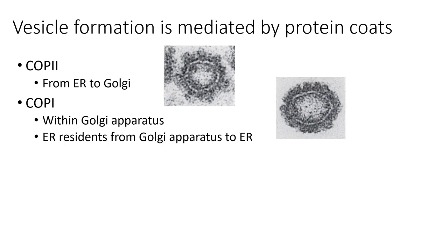We also have another type of protein coat called the COP1 coat. The COP1 coat is for sending vesicles within the Golgi apparatus, from one Golgi compartment to another. The COP1 coat is also used for sending back any resident ER proteins from the Golgi to the ER. Some proteins have a fate to live out their life in the ER, so they get translated, have co-translational modifications begin in the ER, get sent to the Golgi to finish post-translational modifications, and then get sent backwards in this pathway back to the ER. To do that backwards motion, you'd have this COP1 protein coat.